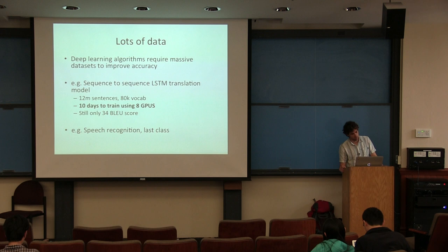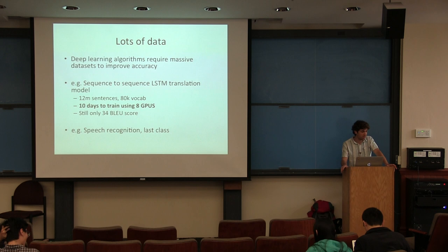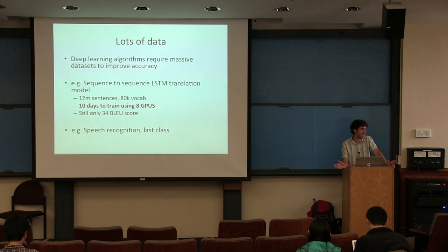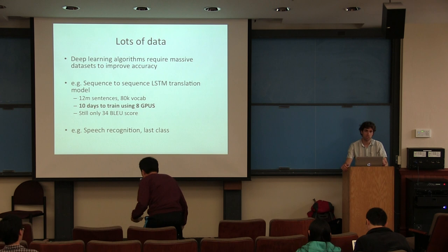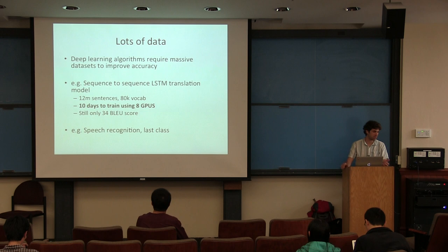So we need to be able to train on large datasets, and that means having algorithms that run very quickly. As an example, the recent sequence-to-sequence LSTM translation paper was trained on a dataset of 12 million sentences with an 80,000-word vocabulary. It took 10 days to train on eight GPUs, and it's still not even state-of-the-art — human-engineered machine translation systems are still doing better.